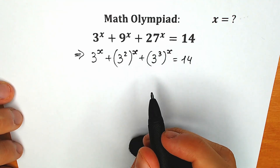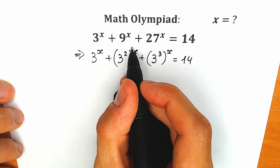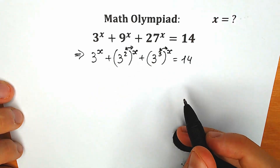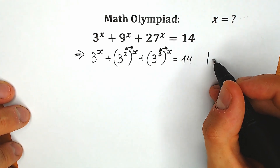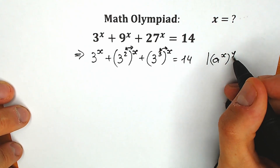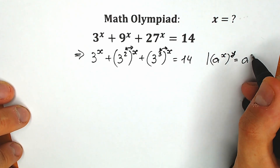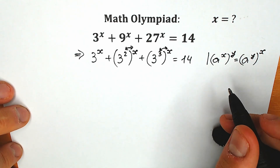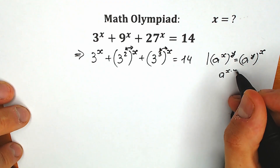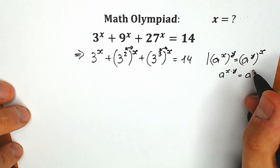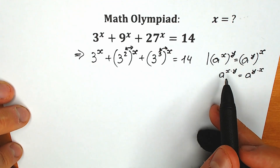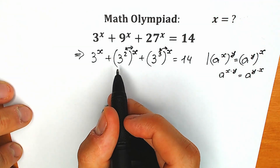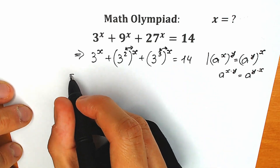Right now we need to know a rule about the interchange rule. When we have a to the power x raised to the power y, you can easily write it as a to the power y raised to the power x — because of multiplication, it equals a to the power x times y, or equivalently a to the power y times x. So we can easily swap the 2 and x places.